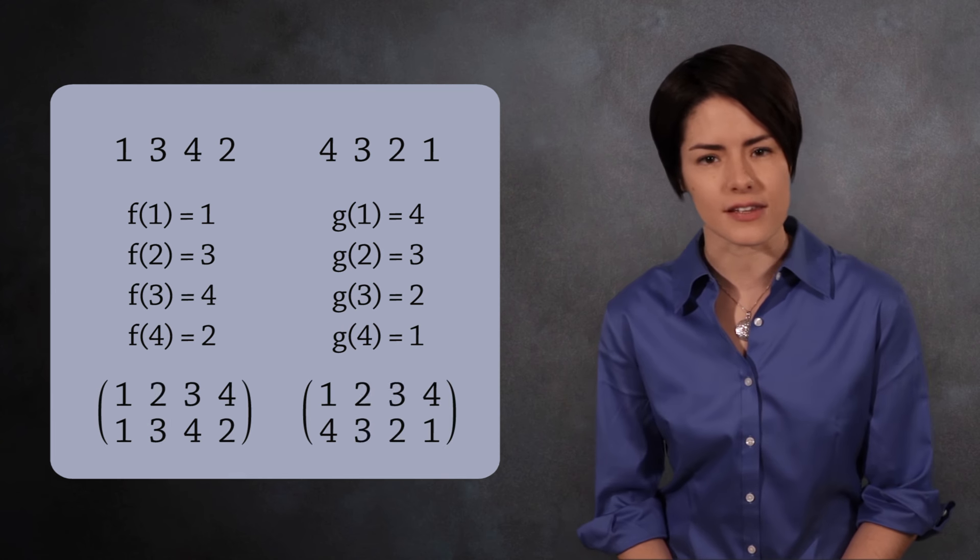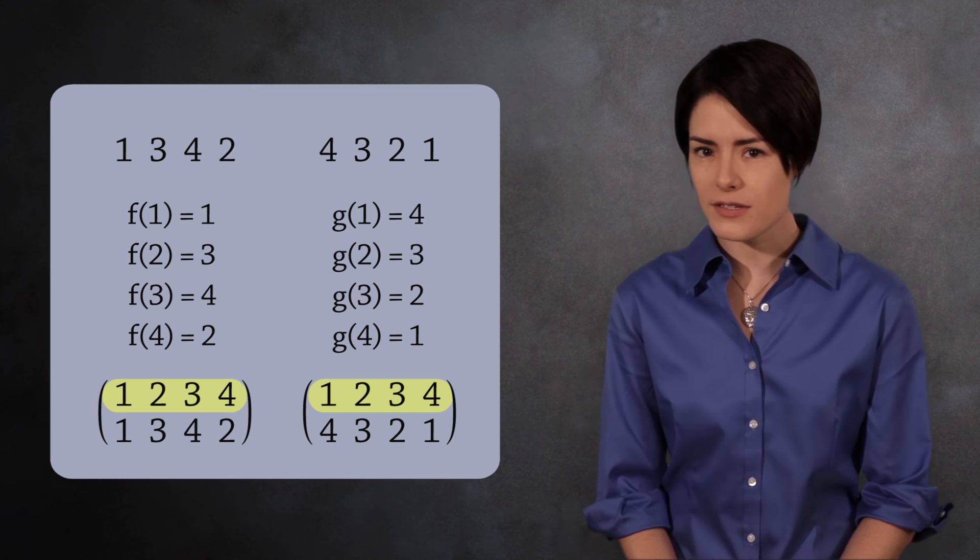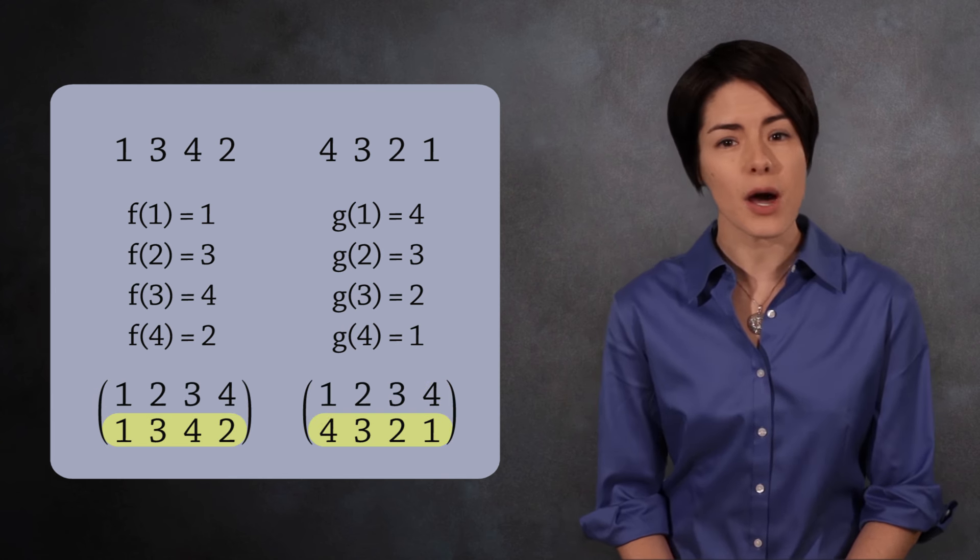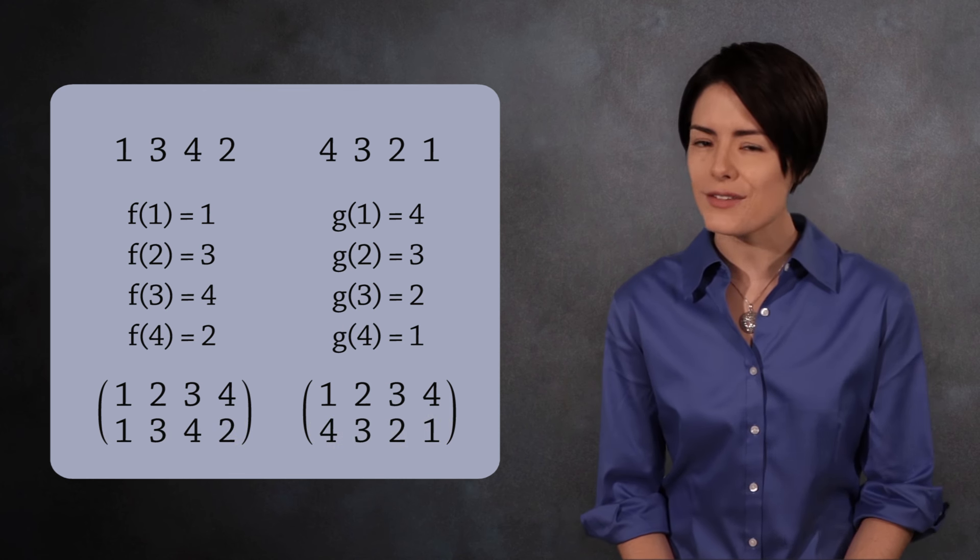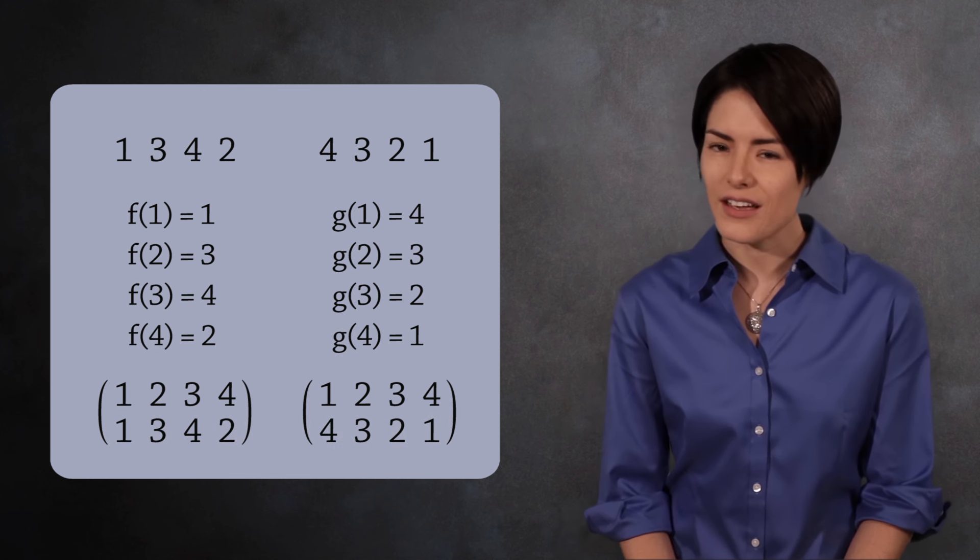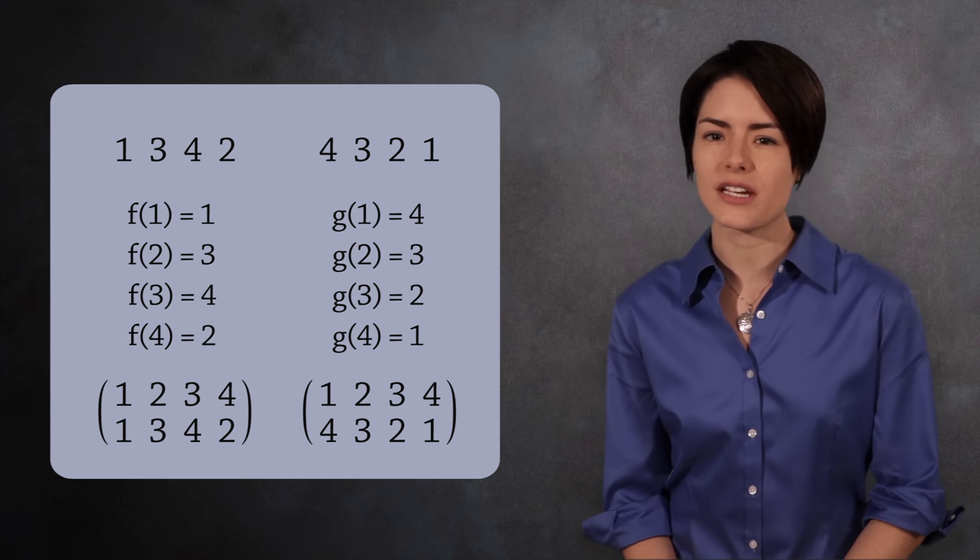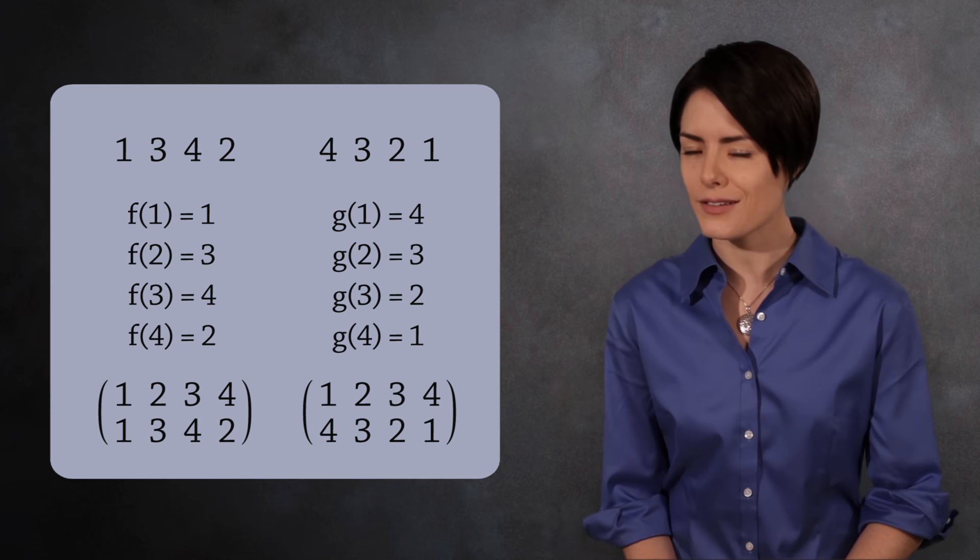So we can write the permutations like this. The top row is the inputs, the elements of the set, and the bottom row is the outputs, the values each number is mapped to. This is a time-saving notation. There are other ways to represent permutations, which we'll talk about in a different video.